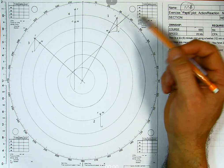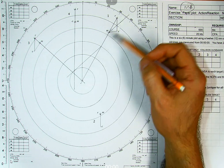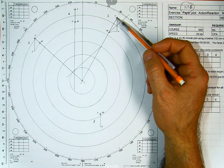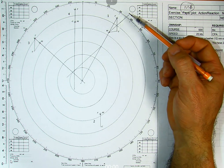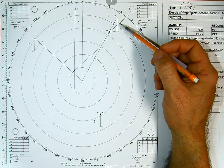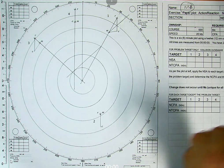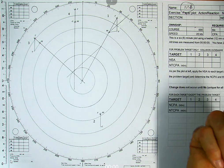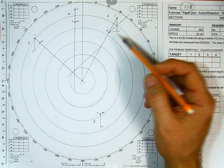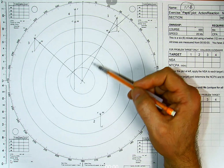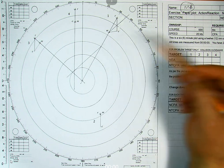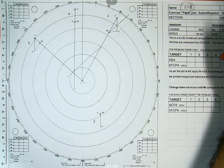This target 1 is on our starboard bow and has a CPA of zero — it's the problem target. But we're the burdened vessel, so we're the one that has to make a course change or a speed change. We said we'd wait until it's six miles — Mx of six — and we want a CPA of two.